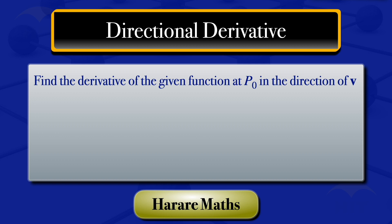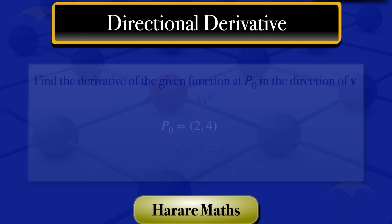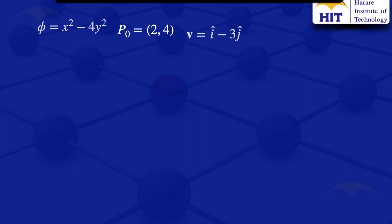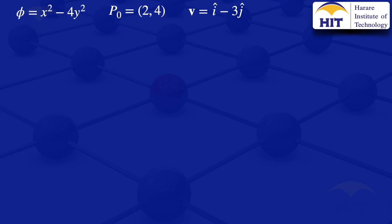In this video, I'm going to find the directional derivative of the scalar field φ which equals x² minus 4y² at the point (2, 4) in the direction of the vector v which equals i minus 3j. So we have that scalar field, the point P, and the vector v.